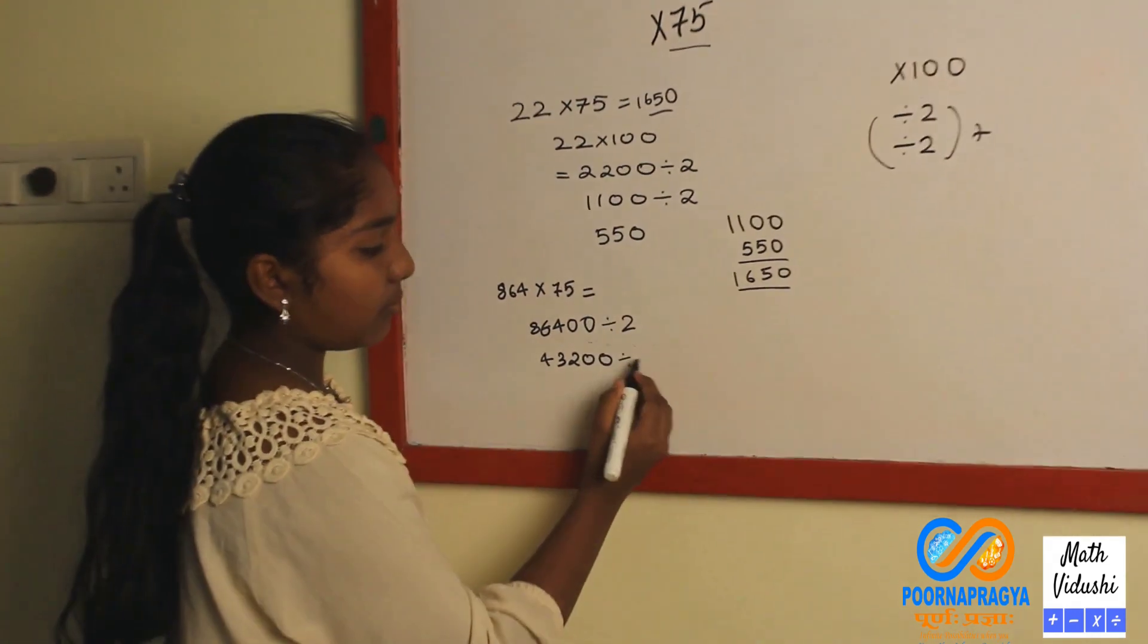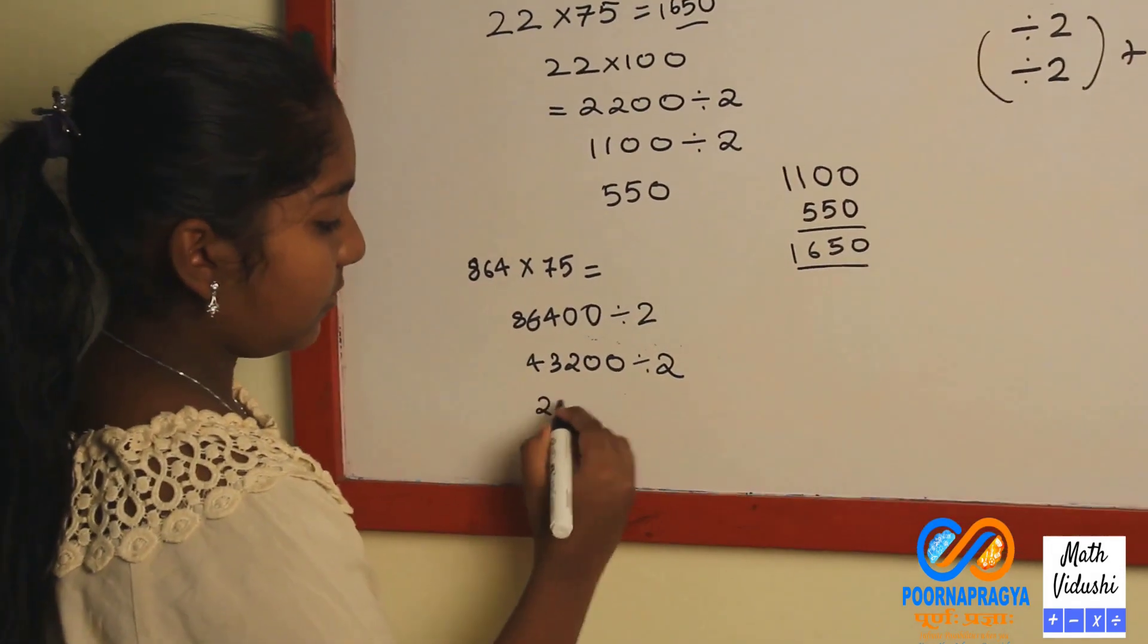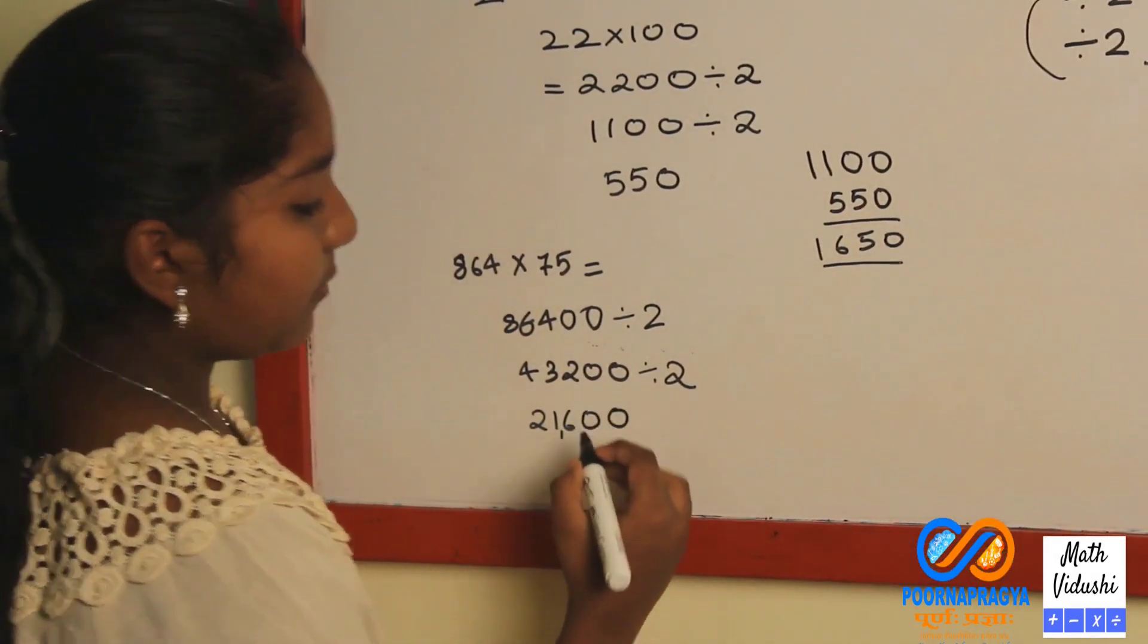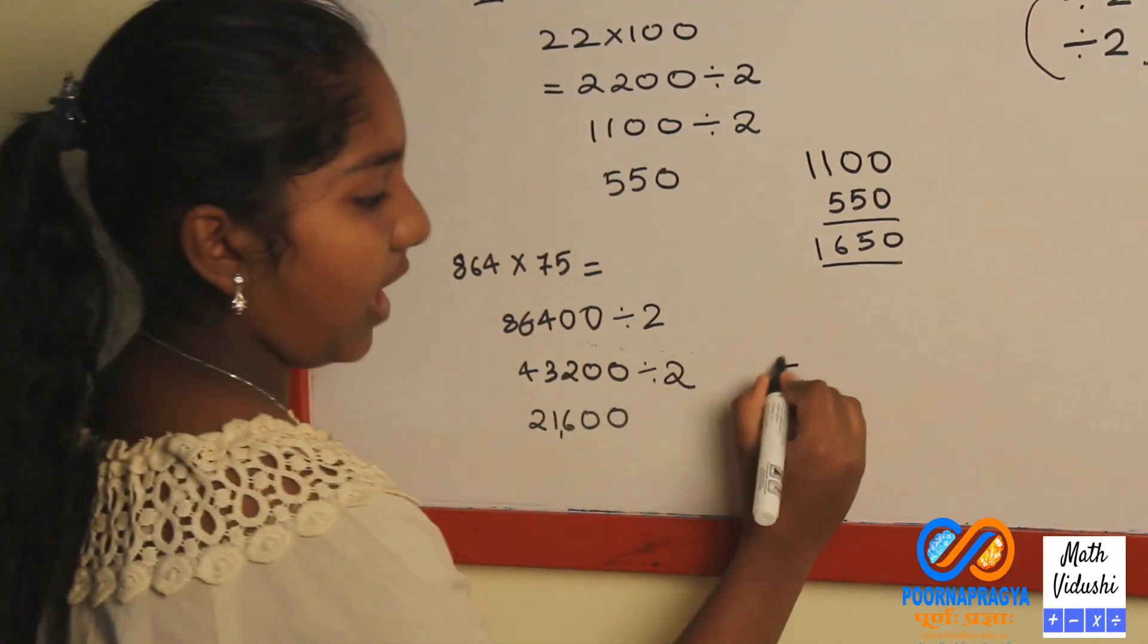Now divide this number again by 2. You will get 21600.